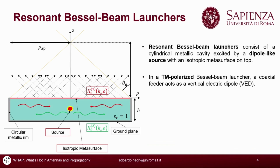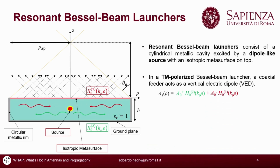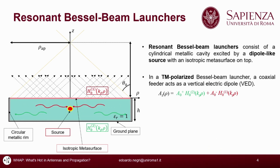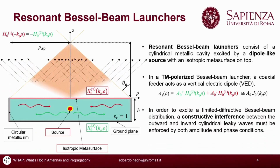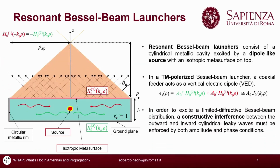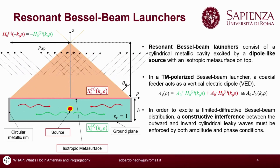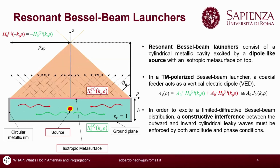A dipole-like source generates an outward cylindrical leaky wave, which is reflected on the circular metallic rim, giving the desired inward propagation. At this point, having the needed components, it is possible to generate the Bessel beam distribution by enforcing a constructive interference of them through amplitude and phase conditions.